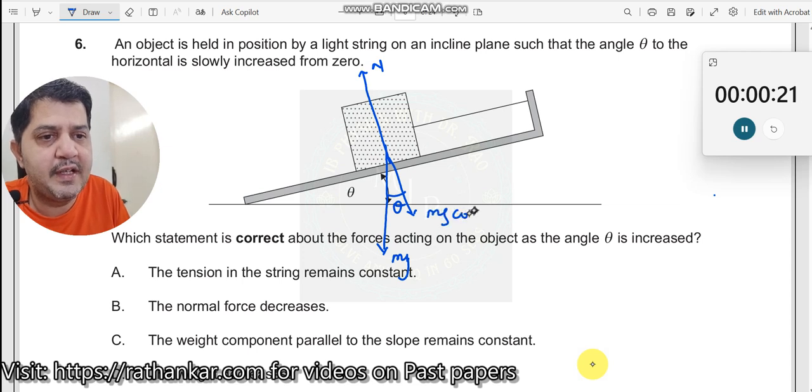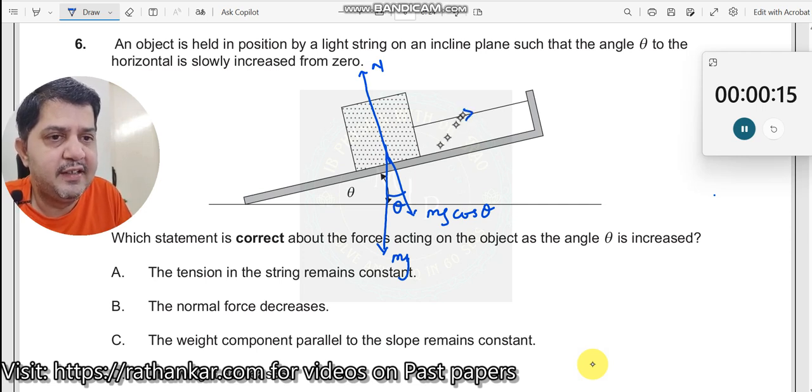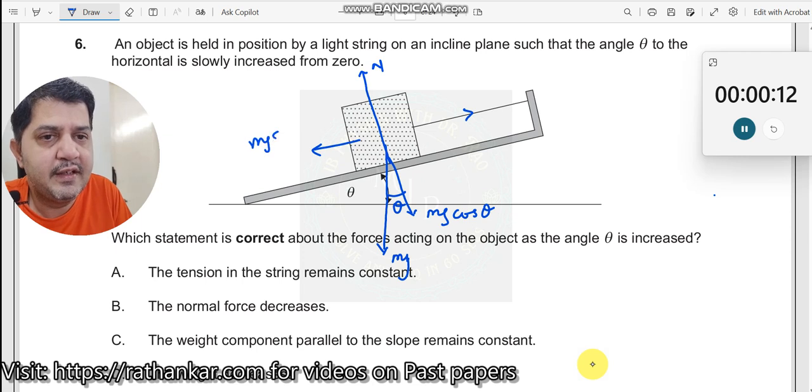This should be equal to mg cos theta. So you can see N is equal to mg cos theta. What about tension here? This tension should be equal to mg sine theta. Tension equals mg sine theta.